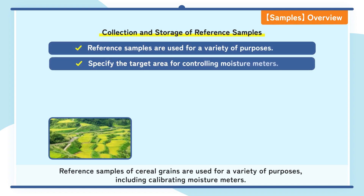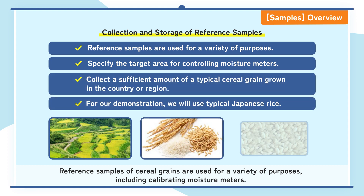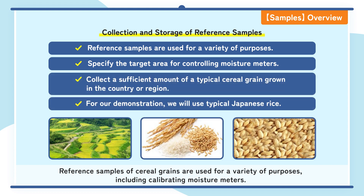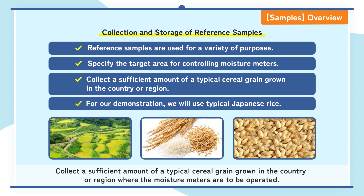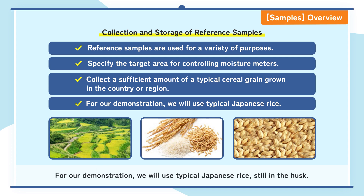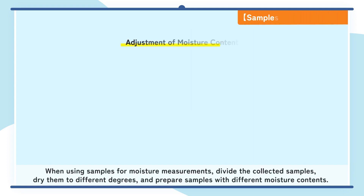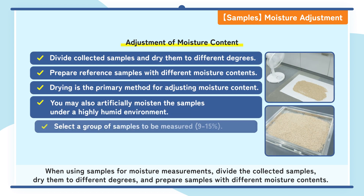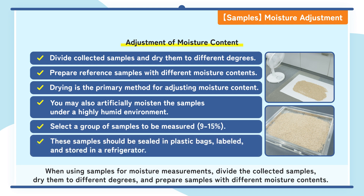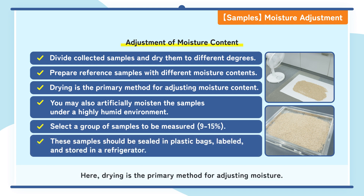Reference samples of cereal grains are used for a variety of purposes, including calibrating moisture meters. Specify the target area for controlling moisture meters. Collect a sufficient amount of a typical cereal grain grown in the country or region where the moisture meters are to be operated. For our demonstration, we will use typical Japanese rice still in the husk. When using samples for moisture measurements, divide the collected samples, dry them to different degrees, and prepare samples with different moisture contents.